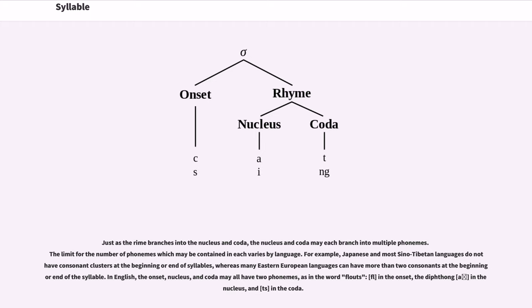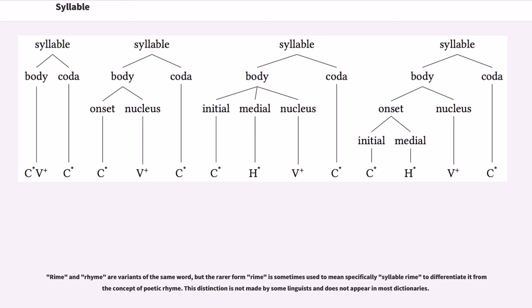In English, the onset, nucleus, and coda may all have two phonemes, as in the word flouts: f-l in the onset, the diphthong in the nucleus, and t-s in the coda.